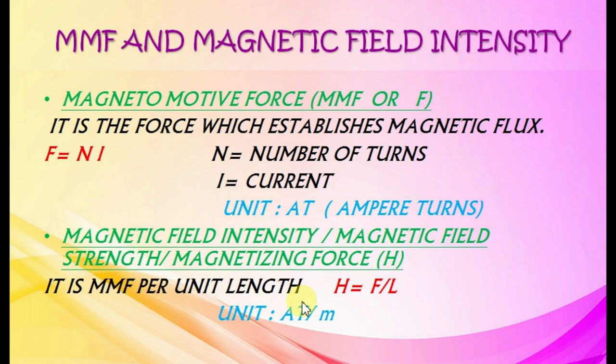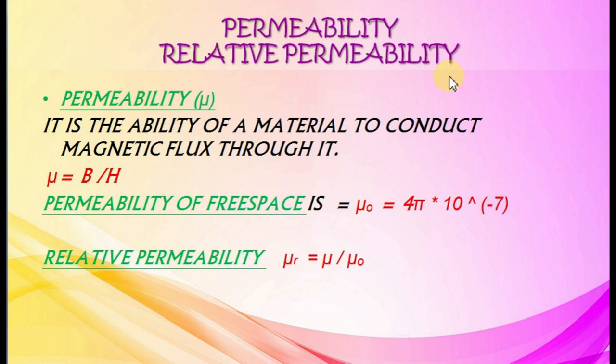Permeability and relative permeability. Permeability mu is the ability of a material to conduct magnetic flux through it. Mu equals B by H. Permeability of free space: mu zero equals 4 pi into 10 raised to minus 7. Relative permeability mu R equals mu by mu zero.